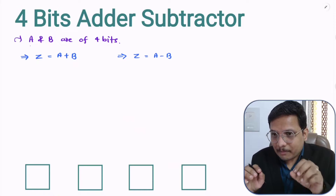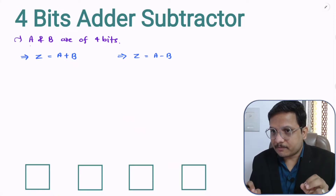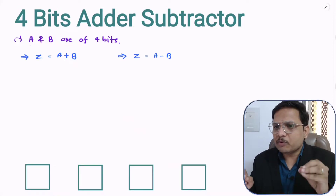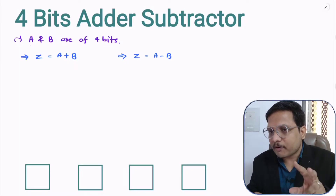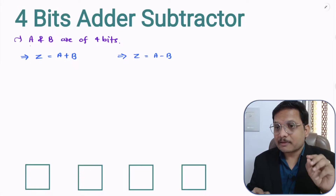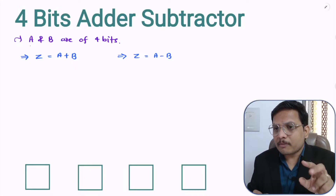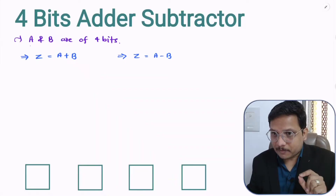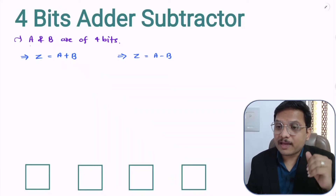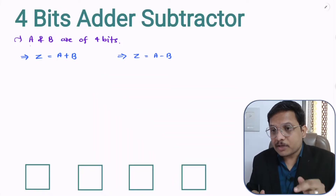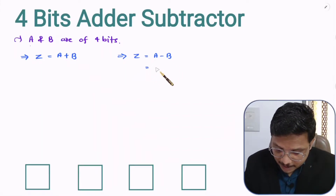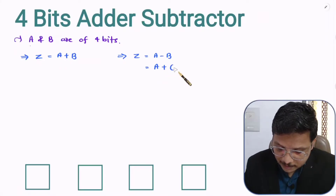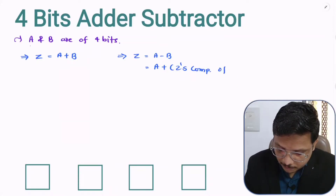So how can we make a circuit for subtraction? Simply, you need to consider B as negative data. If you want to perform A minus B, then you can say you want to perform A plus negative of B. In computer, how we consider negative data is with the usage of 2's complement. So A minus B means A plus negative of B, which means 2's complement of B.